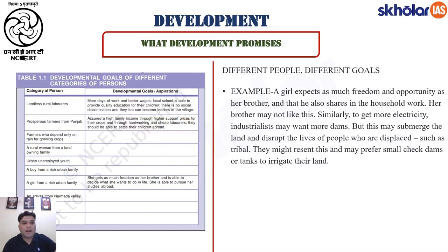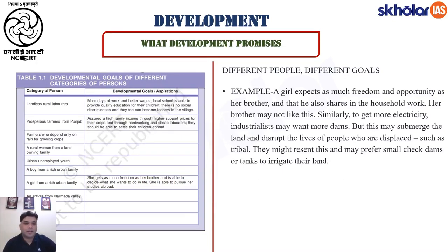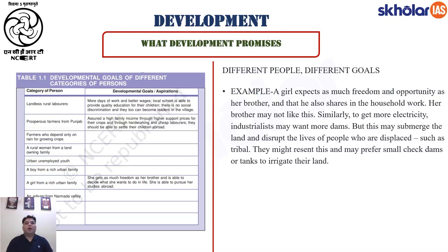Then you have prosperous farmers from Punjab. Their aspiration is an assured high family income through higher support prices for their crops — generally the MSP, minimum support price, which is determined by the government, as we discussed in ninth class NCERT. They achieve this through hardworking and cheap laborers employed on their fields. At the same time, they aspire to settle their children abroad. If you are talking about Punjab, you are talking about Punjabis sending their children to Canada.